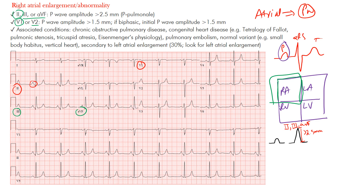These P-waves are pointed and do go beyond 2.5mm — if you measure it on the rhythm strip, it's close to 2.5 or 3mm, meaning this patient actually did have right atrial enlargement. This is called P-pulmonale. You can think of the P for peaked P-waves — some people call them Himalayan or tall P-waves.